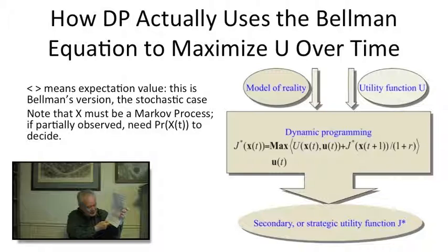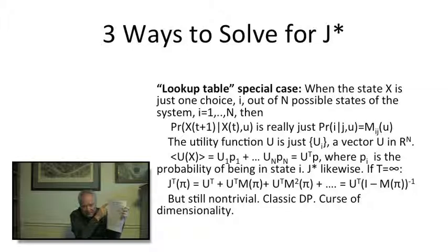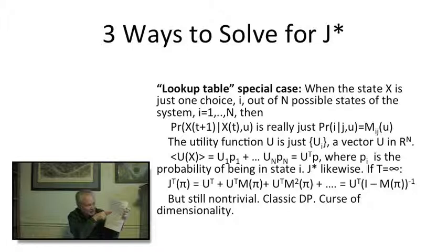Next I will move on to what the three ways are to solve that equation. Three of the methods I showed are actually based on three different choices for how to solve for this function J-star. The most famous and historic one is what I would call the lookup table special case. I hope you have the handout so you can read these equations — the equations are obviously important.